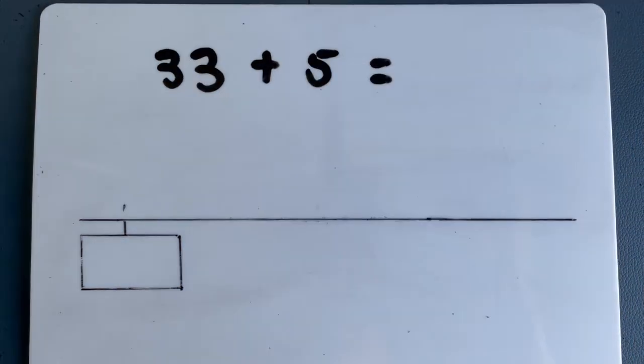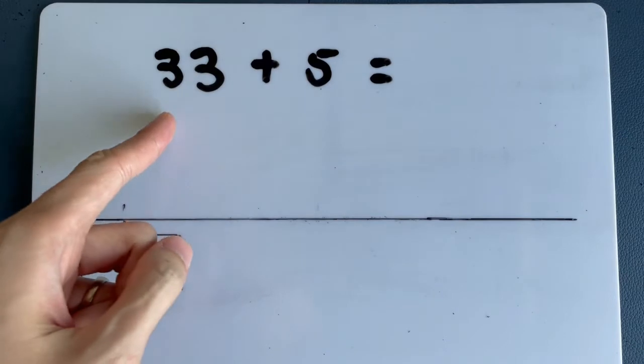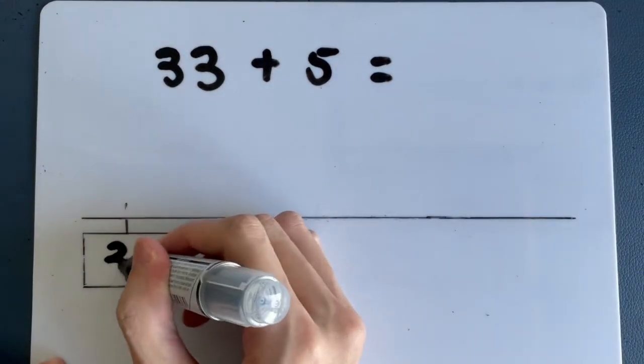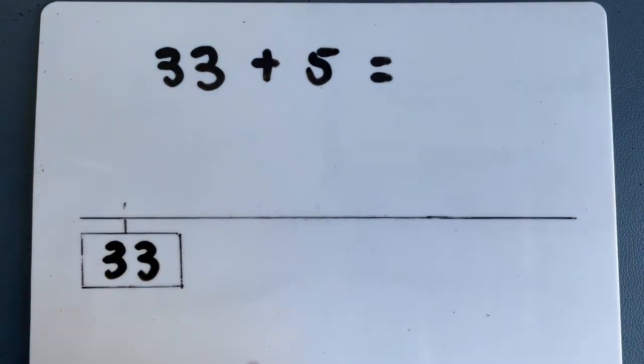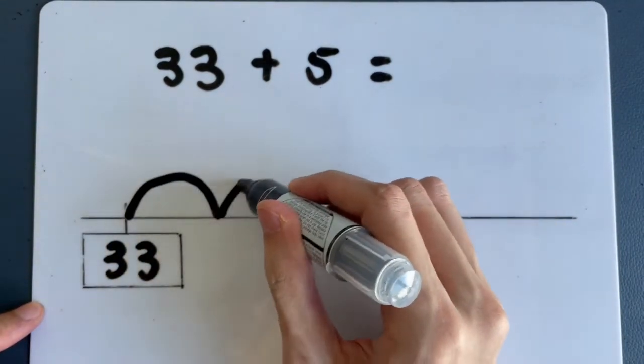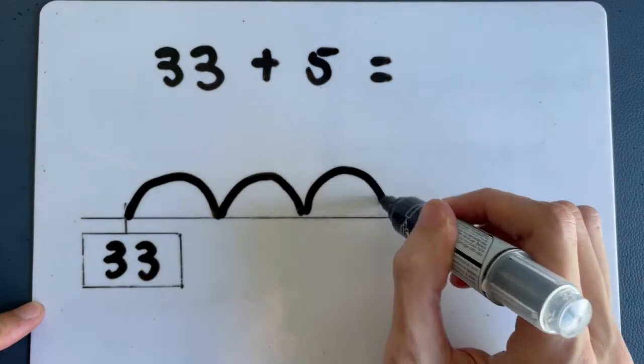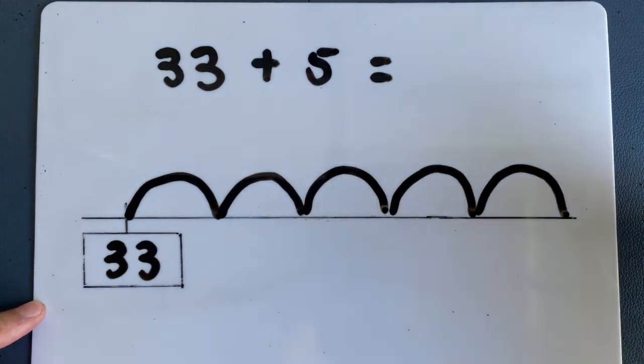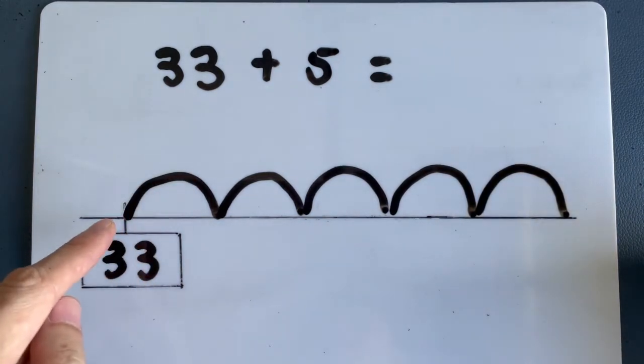Let's have another example. Second example here, 33 plus 5. So I am going to write the number here, 33, and this is our start line. How many times do we have to jump this time? It is 5 times. So let's start. Ready? 1, 2, 3, 4, and finally 5. So I have just jumped 5 times.